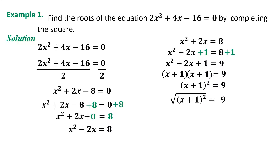We insert radical signs on both sides of the equation. We can now cancel the radical sign and the square. Cancel and cancel — the equation is x + 1 = ±√9. The square root of 9 is ±3. Since our target is to find x, we need to transpose the +1 to the other side of the equation.